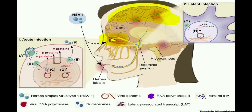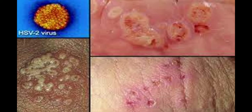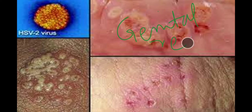HSV1 is now the most common cause of genital herpes in the UK. HSV1 is located in the orolabial region, while HSV2 is located in the genital region.